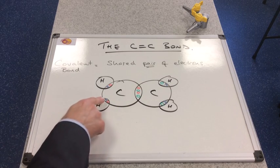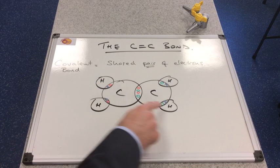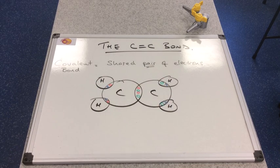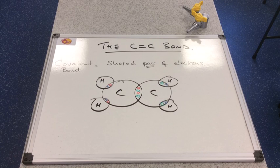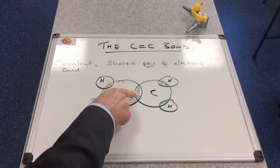And the carbon on the right has the green circles for its electrons. So you can see we have a single covalent bond here, here, here and here. So that's one shared pair of electrons between the two atoms. Between the two carbons, you can see we have two pairs shared.